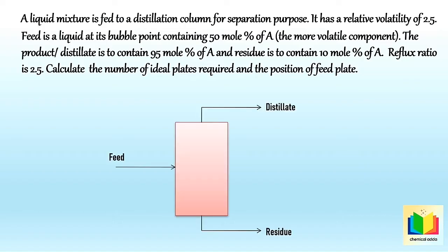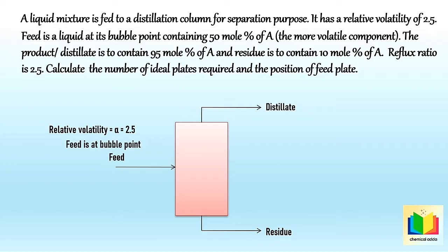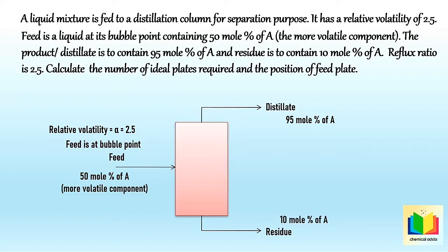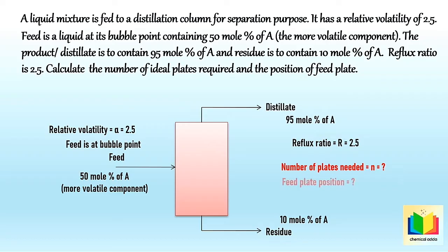A liquid mixture is fed to a distillation column for separation. It has a relative volatility of 2.5. The feed is a liquid at its bubble point, containing 50 mole percent of component A, which is the more volatile and desirable component. The distillate is to contain 95 mole percent of A, the residue is to contain 10 mole percent of A, and the reflux ratio is 2.5. Calculate the number of ideal plates required and the position of the feed plate.